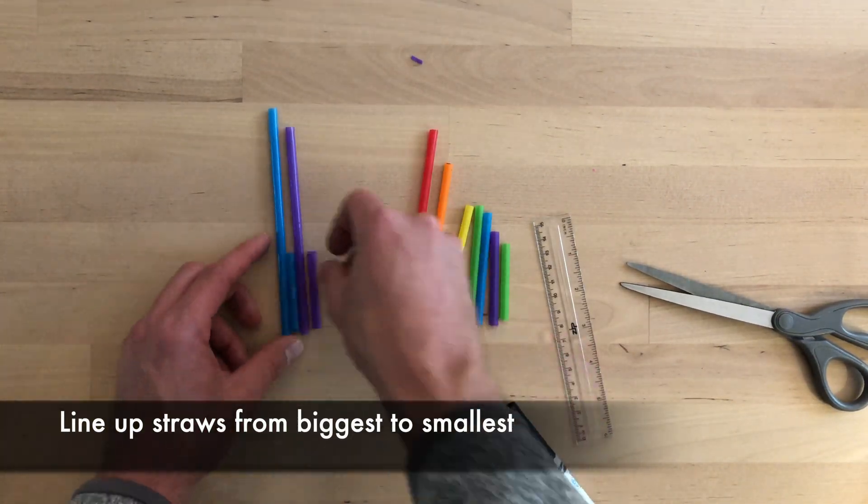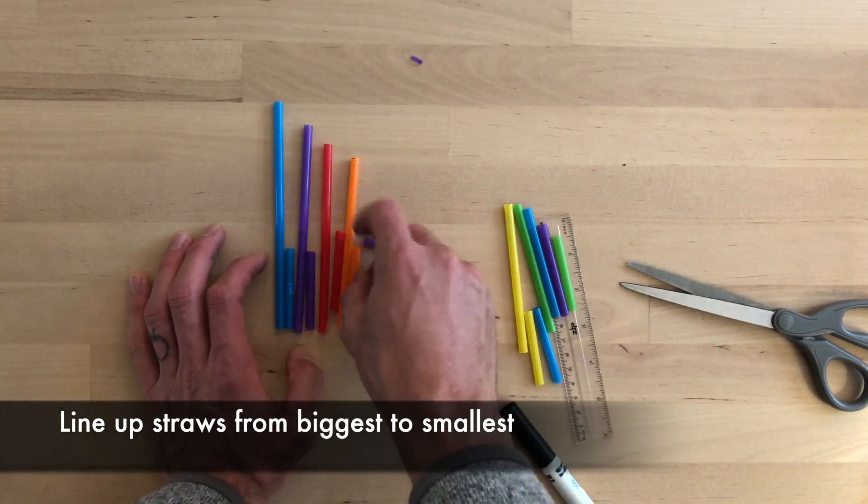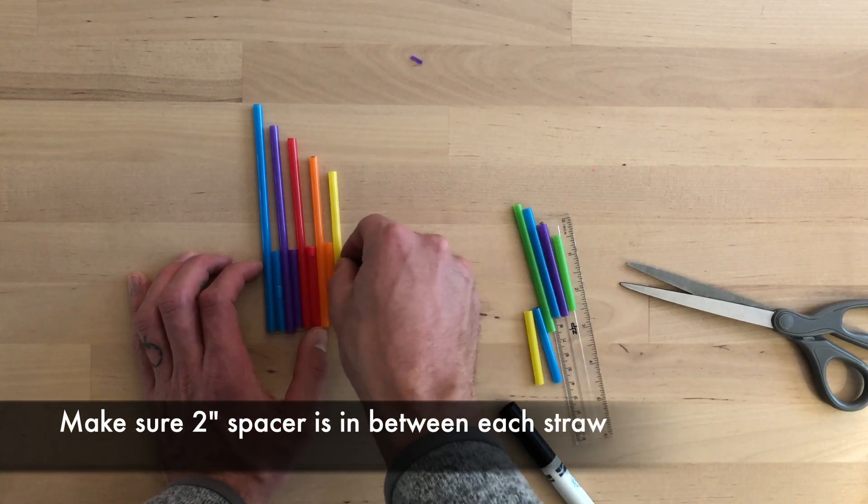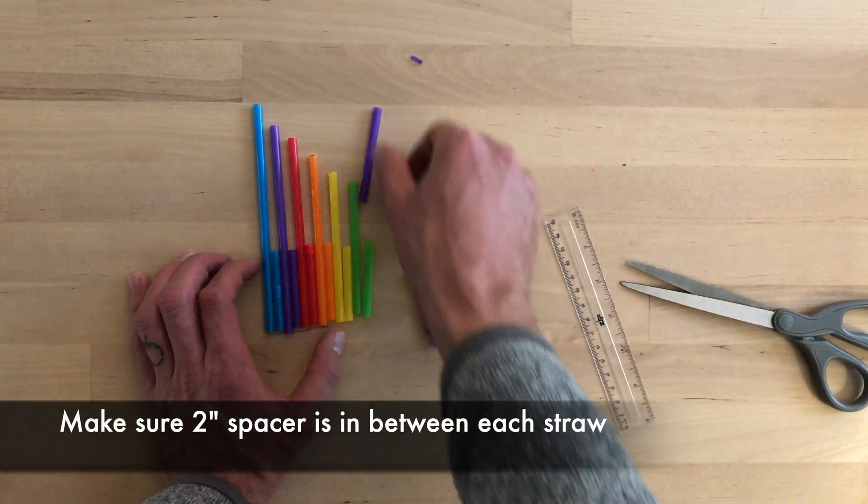Line up straws from biggest to smallest. Remember, the longer the straw, the deeper the note. The shorter the straw, the higher the notes. Make sure your two inch spacer is between each straw.